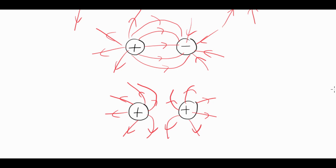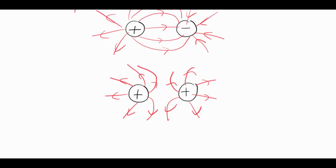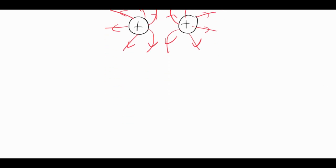At Level 2 NCEA physics you're normally going to be dealing with uniform electric fields. These are not examples of that because the field lines are closer together in some places than others, so the field is not uniform. A uniform electric field would look something like this.